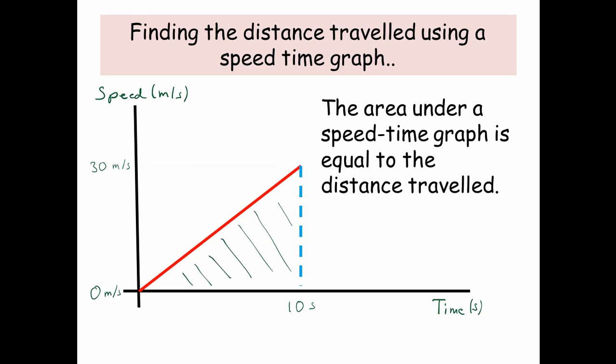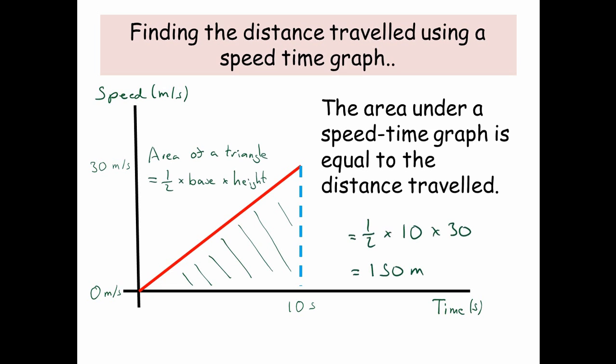It doesn't matter whether we're going at a constant speed or whether we're increasing our speed. Here we're going from 0 metres per second, accelerating up to 30 metres per second in 10 seconds. The shape we've got is a triangle, so we use the area of a triangle: a half times the base times the height — a half times 10 times 30 — which gives us 150 metres.